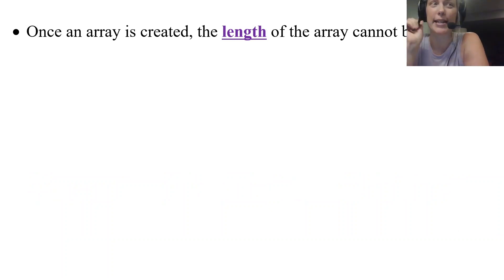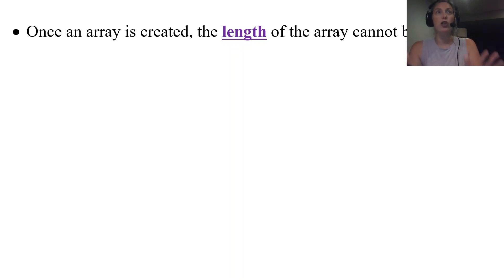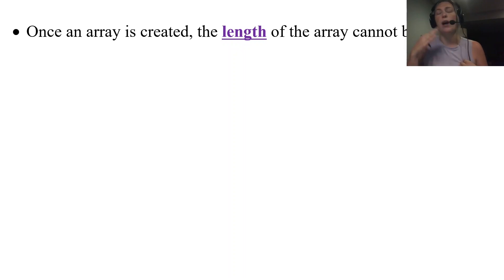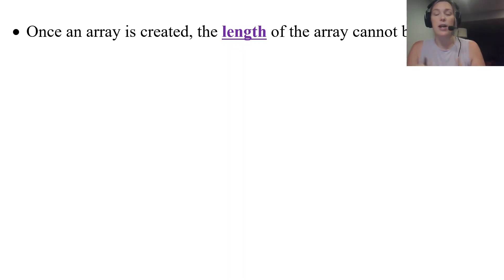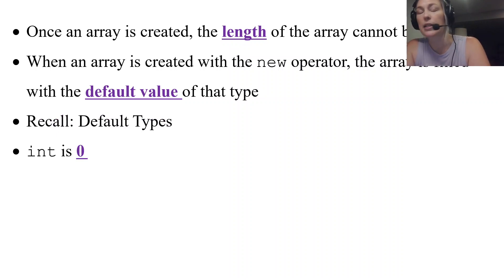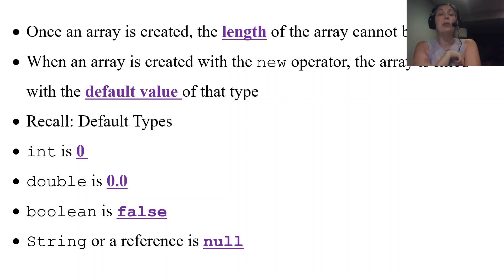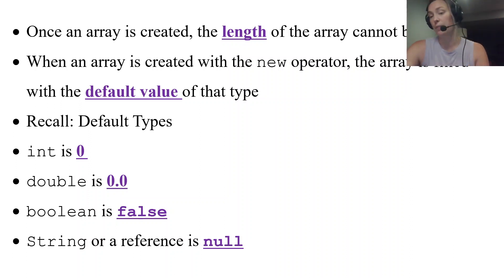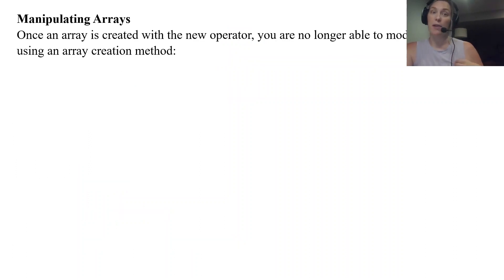Once created, the length of an array cannot be changed — it is a fixed length. If I create a grades array of 50 doubles, I can't later change it to 55 or 100; I'd have to make a brand new array. When an array is created with the new operator, it's filled with default values: int defaults to 0, double to 0.0, boolean to false, and any object or String defaults to null.